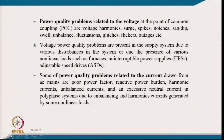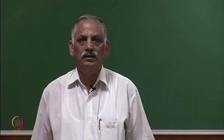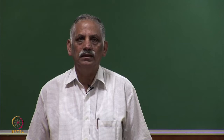Some power quality problems related to current drawn from the AC mains are poor power factor, which causes burden on the distribution system as well as transformer feeders and equipment, reactive power burden, harmonic currents in addition to fundamental current, unbalanced current quantifiable as negative sequence current, and excessive neutral current in polyphase systems, especially 4-wire distribution systems.